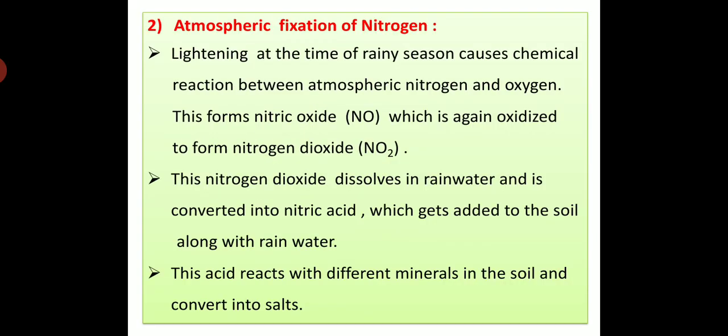Second type is atmospheric fixation of nitrogen. Lightning at the time of rainy season causes chemical reaction between atmospheric nitrogen and oxygen. This forms nitric oxide NO, which is again oxidized to form nitrogen dioxide, means NO2. This nitrogen dioxide dissolves in rainwater and is converted into nitric acid. This nitric acid gets added to the soil along with rainwater. This acid reacts with different minerals in the soil and converts into salt. This is atmospheric fixation of nitrogen.